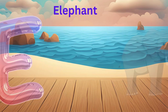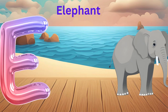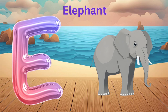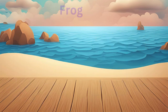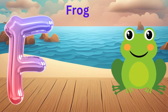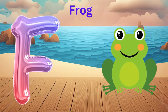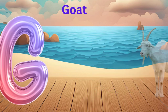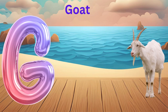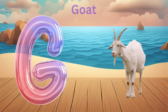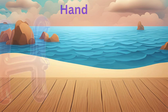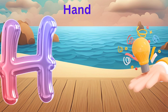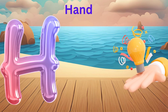E is for Elephant, E-E-Elephant. F is for Fish, F-F-Fish. G is for Godzilla, G-G-Godzilla. H is for Horse, H-H-H-Horse.